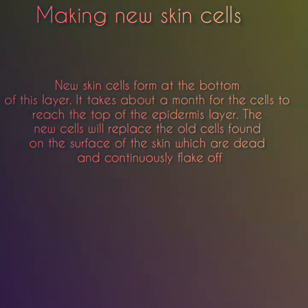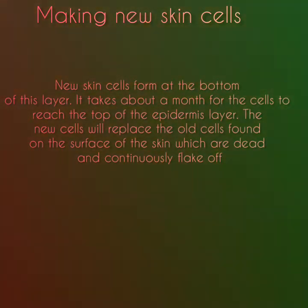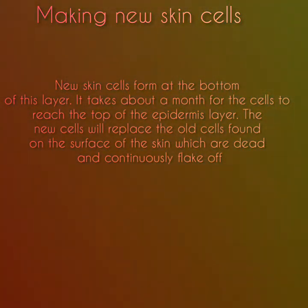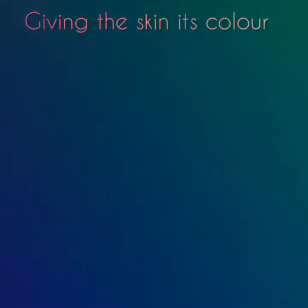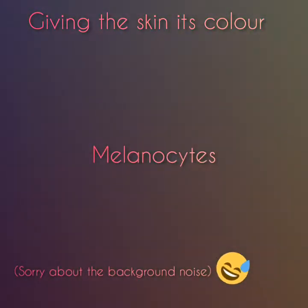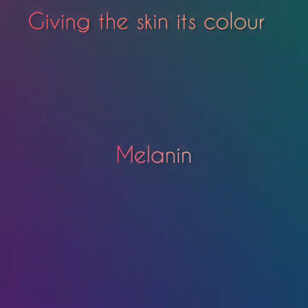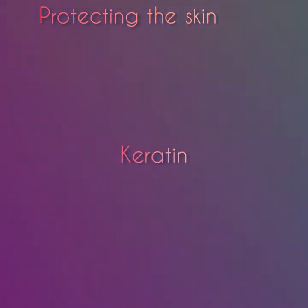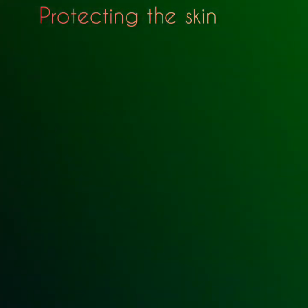New skin cells form at the bottom of this layer and it takes about a month for skin cells to reach the top of the epidermis layer. The new cells replace the old dead cells found on the surface of the skin, which continuously flake off. The epidermis contains melanocytes, which are cells that produce melanin, the pigment that gives the skin its colour. Keratin is a protein made by cells in the epidermis that gives the skin its toughness and strength.